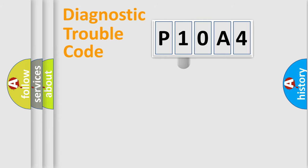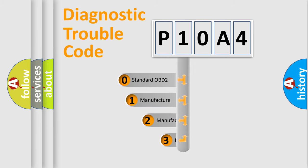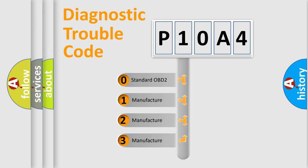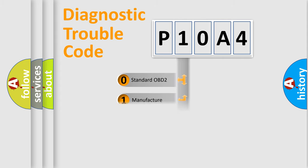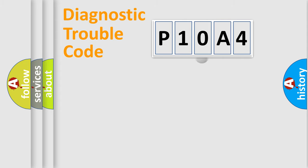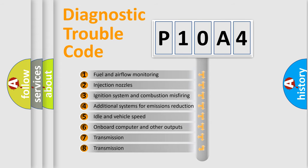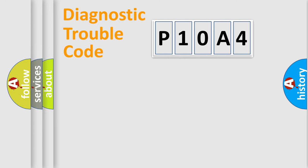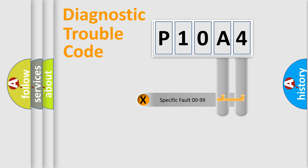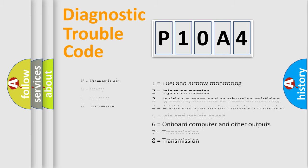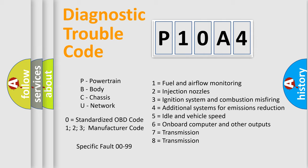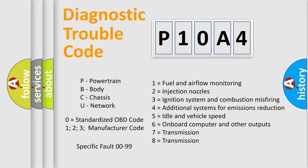This distribution is defined in the first character of the code. If the second character is expressed as zero, it is a standardized error. In the case of numbers 1, 2, or 3, it is a more manufacturer-specific expression of the car error. The third character specifies a subset of errors. This distribution is valid only for the standardized DTC code, and only the last two characters define the specific fault of the group.